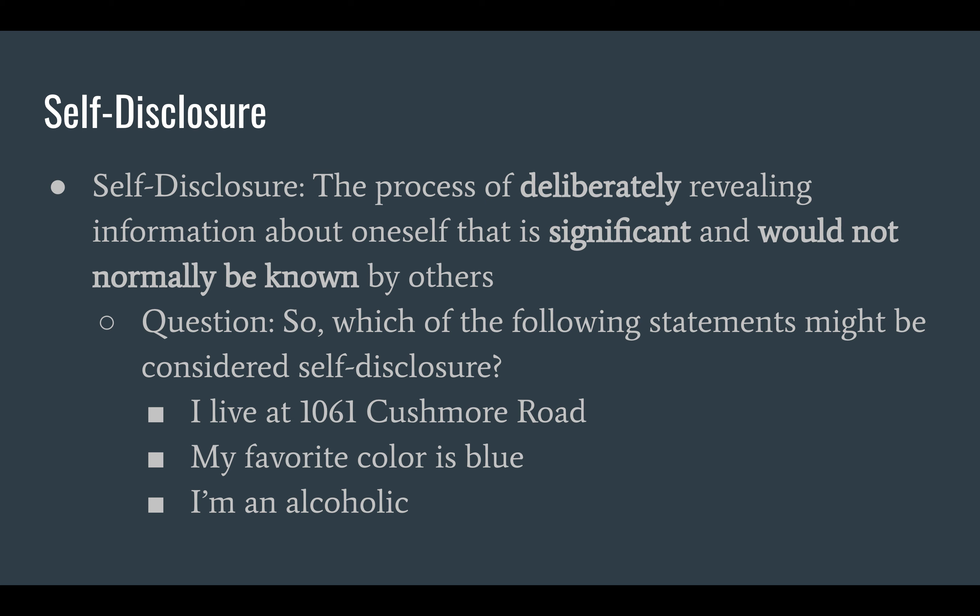Another model for self-disclosure is what's known as the Johari window. This is all about elements that we hide from other people — the things we keep to ourselves, and even things that we don't know about ourselves, things we hide from ourselves. They call it a window because it looks like a window with four panes. The idea is there are some things known to you, some things unknown to you, some things known to others, and some things unknown to others.